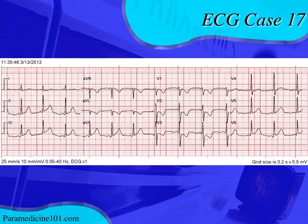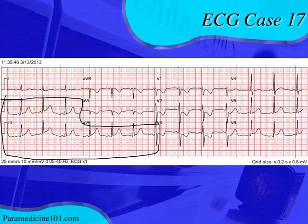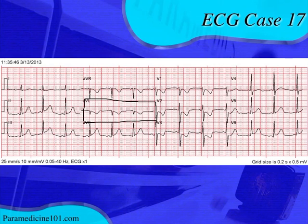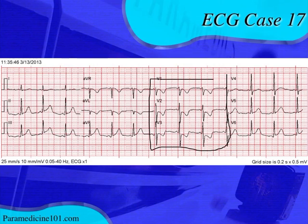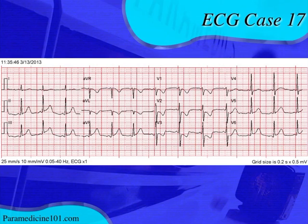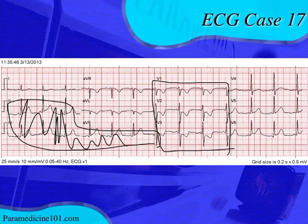Looking at ST and T-wave changes, it is difficult in the inferior leads to identify if there's any ST elevation because we have a wavy, wandering baseline. However, this morphology in AVL — with T-wave inversion and ST depression — the first thing you have to think is early inferior wall MI. This pattern in AVL usually means early inferior wall MI; there's not much else that will cause that morphology. We're considering an early inferior wall MI, but we can't confirm it because of the wavy baseline in the inferior leads.